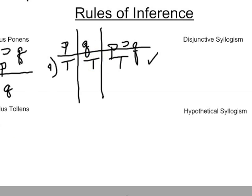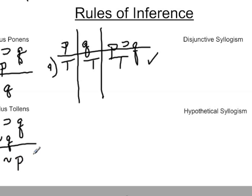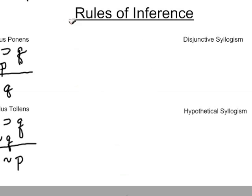Modus tollens uses the same implication. We have if P then Q, but this time we have the idea that we don't have Q. So: if P then Q, not Q, therefore... We tested this by the truth table. We had if P then Q, and we said this was a truthful rule. If P then Q was true, and Q was false, we knew that from the truth table.